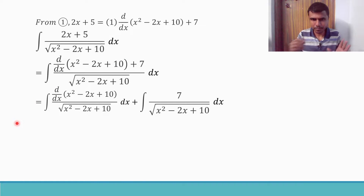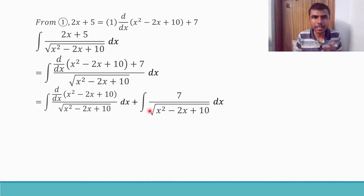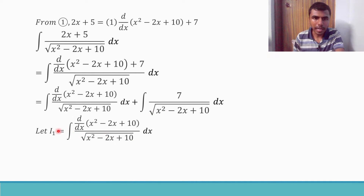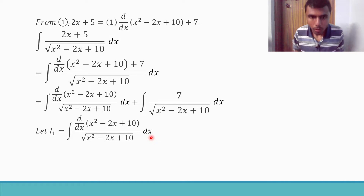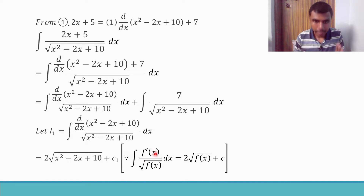If you integrate everything in one step it won't look clean, so I suggest integrating the two parts separately. Take the first integral as I₁ and the second as I₂, and at the end we club them as I₁ + I₂. So I₁ is the integral of [derivative of (x² - 2x + 10)] divided by √(x² - 2x + 10). There is a standard property: the integral of f'(x) / √f(x) equals 2√f(x) + C, and it matches exactly here.